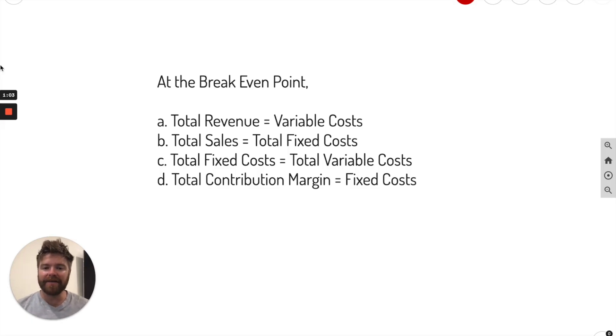Okay, first question: at the break-even point, what happens? Well, to do this problem we need to know more about the break-even point. The break-even point is basically when a company's revenues equal their costs. So we can say it as revenues equal costs. It's what they need to break even.